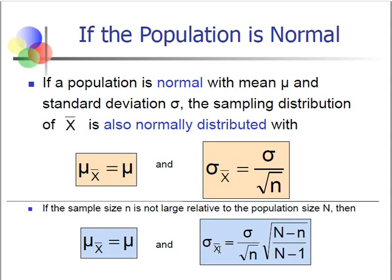We have two cases for determining the standard error. The first case is when the population size is known as well as the sample size. The second case is when the population size is unknown but we know the sample size. So if the population is normally distributed, the sampling distribution of sample means will also be normally distributed, and we use the appropriate standard error formula depending on whether the population size is known.